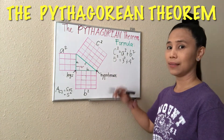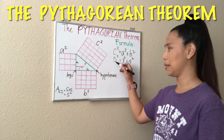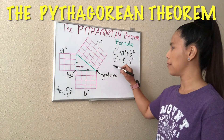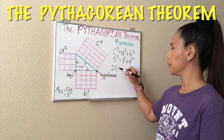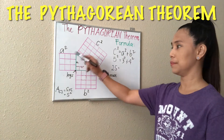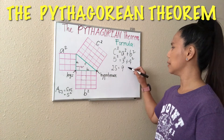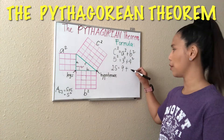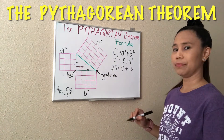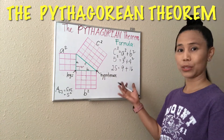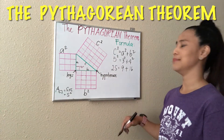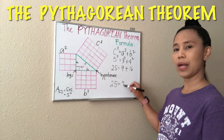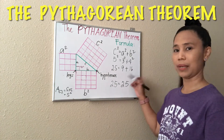What is 5 squared? It means we have to multiply the base, which is 5, by itself. So 5 times 5 is equal to 25. And then 3 times 3 is equal to 9. And then 4 squared is equal to 4 times 4, which is 16. Now is 9 plus 16 equal to 25? Yes. So that means we are correct, and this statement is true.